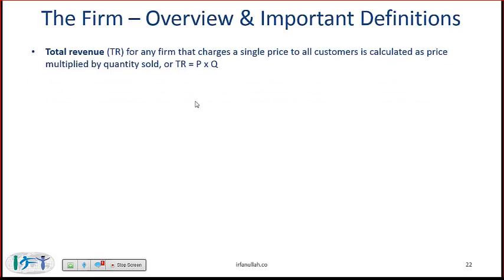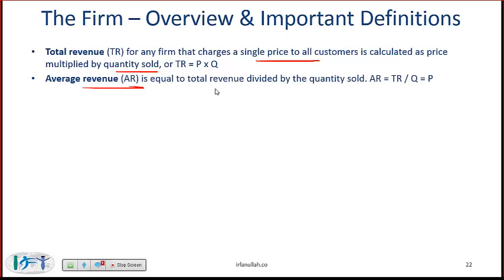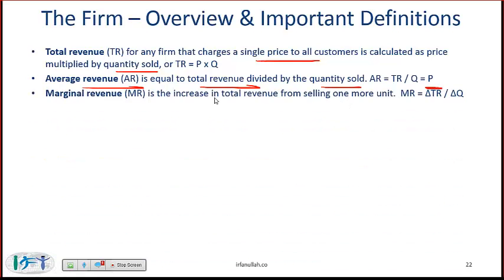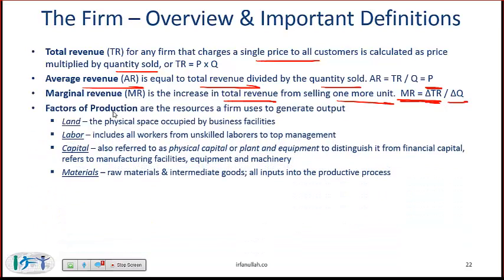Now let's look at some definitions. Total revenue for any firm that charges a single price to all customers is calculated as price multiplied by quantity sold. Average revenue equals total revenue divided by quantity sold, which is also the price. Marginal revenue is the increase in total revenue from selling one more unit — the change in total revenue divided by change in quantity. Factors of production are the resources a firm uses to generate output: land, labor, capital, and materials.